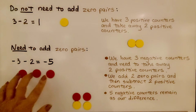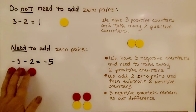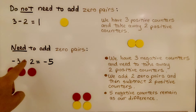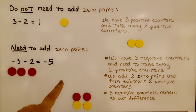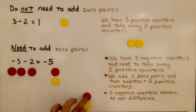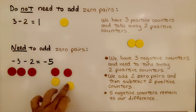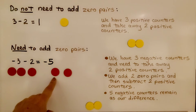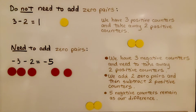Here we will need to add zero pairs. We have negative three, represented by three red counters, and we need to take away two positive counters — minus a positive two. We add two zero pairs: a negative and a positive (that's one zero pair), a negative and a positive (that's another zero pair). Now we can subtract two positive counters. We take those two away and we're left with five negative counters. Negative three minus two is equal to negative five.